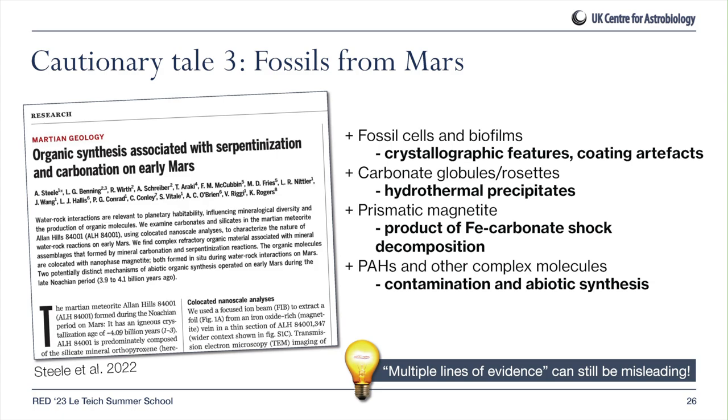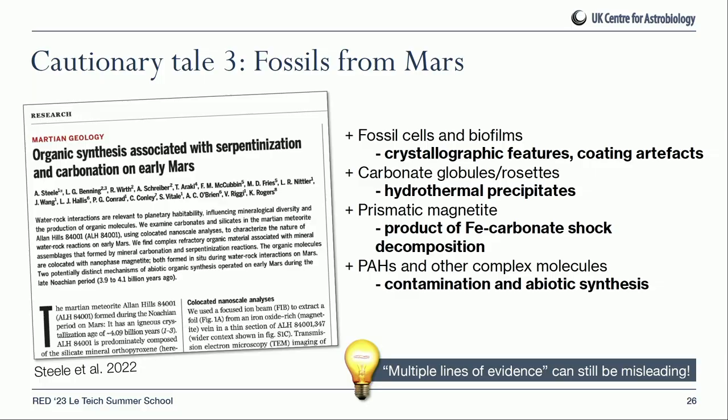The fossil-like structures appear to be artifacts of crystal lattice edges combined with the coating used for electron microscopy. The carbonate globules are explained by hydrothermal alteration. The magnetite crystals can be interpreted as products of shock decomposition of iron carbonates during an impact. The polyaromatic hydrocarbons are probably terrestrial contamination, and we now understand how fairly large aromatic compounds can form on Mars through abiotic synthesis. The lesson: you can have multiple lines of evidence that all look like life and still be wrong — multiple ambiguous lines of evidence don't constitute good evidence of life.